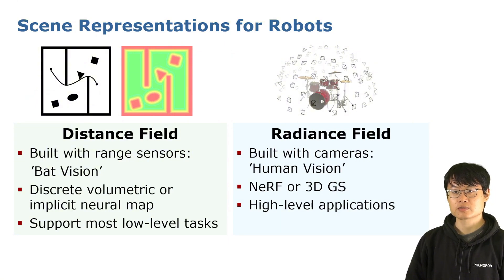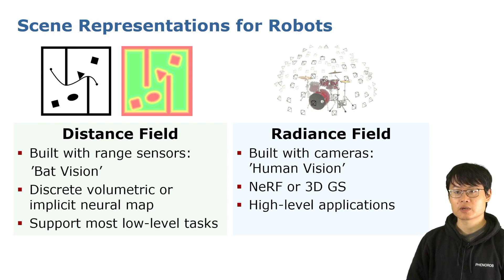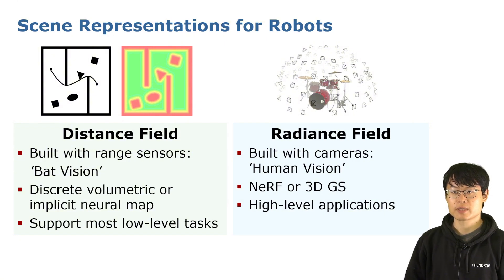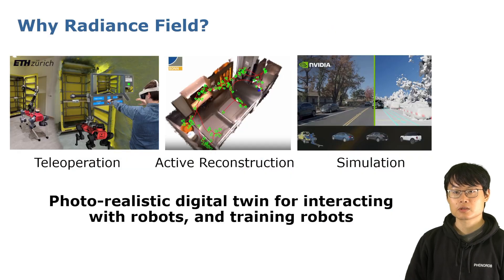Nowadays, robots use two classes of dense scene representations: the distance field and the radiance field. Distance fields can support basic robot navigation, but for high-level applications requiring rich photometric information, a radiance field such as 3D Gaussian splatting is a better choice. For example, radiance fields can be applied in teleoperation, active reconstruction, and simulation for robot learning.